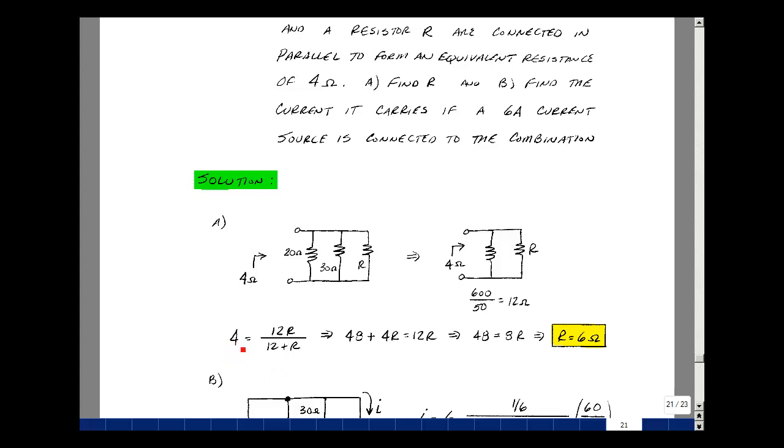I could solve this by cross-multiplying here. So I've got 4 times 12 which is 48 and then 4 times R. That has to equal 12R. Bring this over here you have 8R and then dividing that 8 into 48 and you get 6.